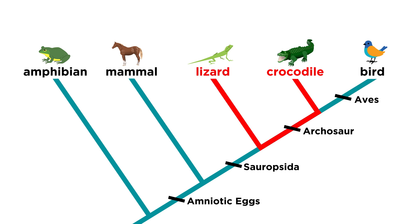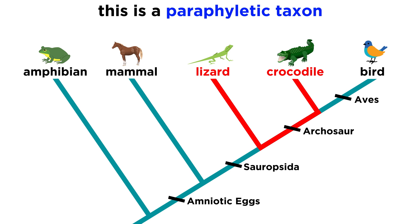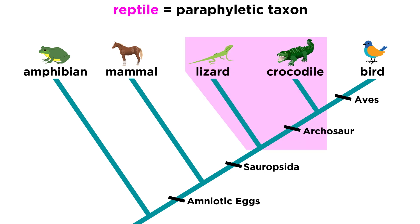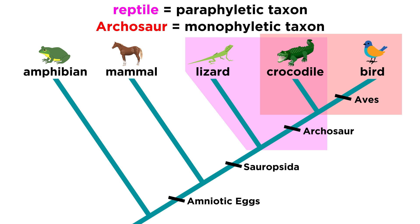Now if we group together the lizards and the crocodiles, we create a paraphyletic grouping. This is because we are not including all their descendants, as birds are clearly omitted, and this is the key difference between monophyly and paraphyly. So the classification of reptile is actually paraphyletic, but the classification archosaur is monophyletic, because the latter encapsulates all descendants.